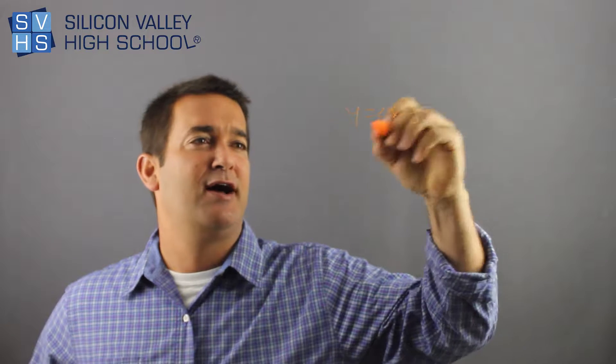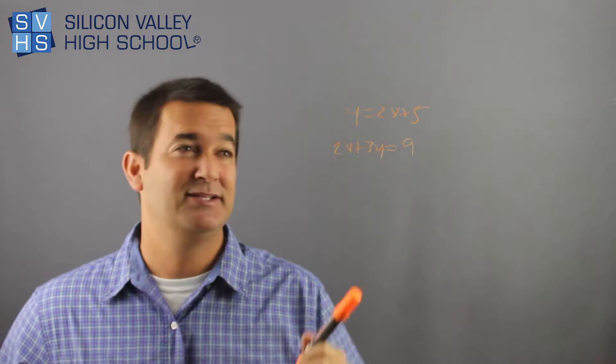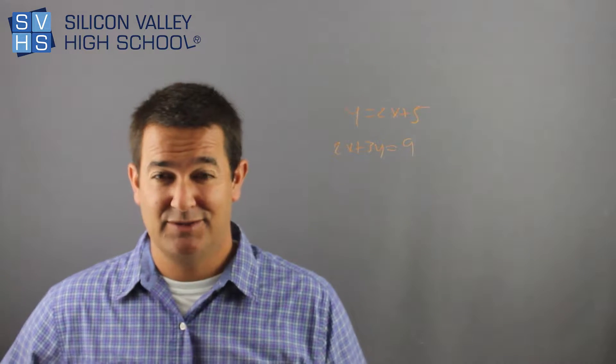There's a bunch of ways to solve systems of equations, and what that means is like y equals 2x plus 5 and 2x plus 3y equals 9. A system of equations means two equations, two variables.